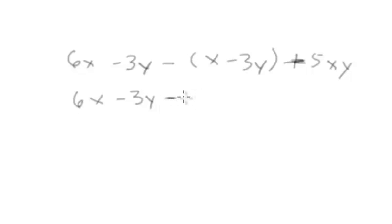You can either put x or 1x, it really doesn't matter. We'll do 1x just to make sure it's clear. And then negative 1 times negative 3y is going to be negative 1 times negative 3 is 3, so that's going to be plus 3y plus 5xy.